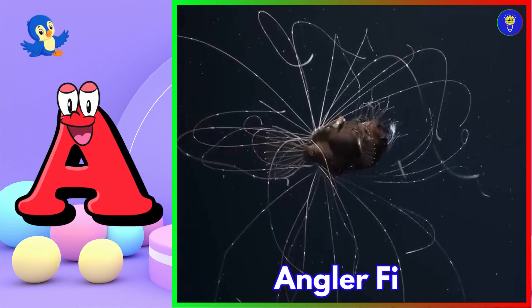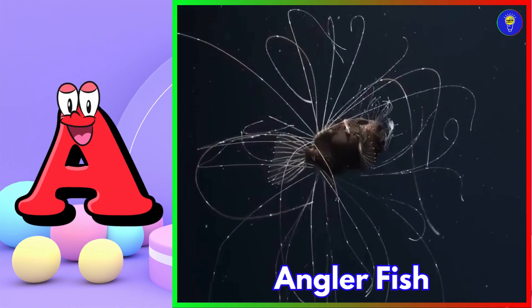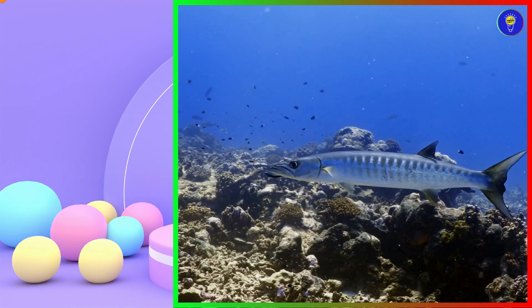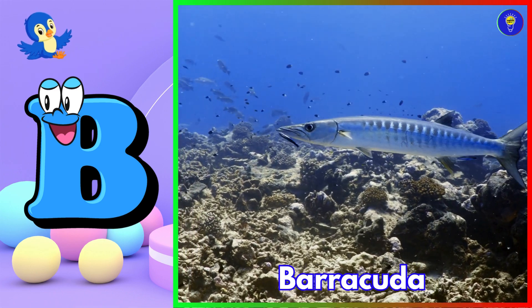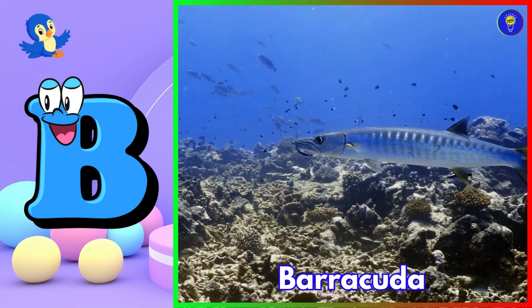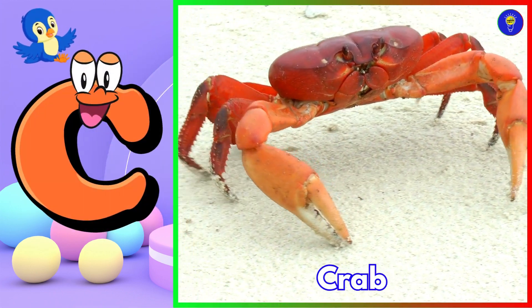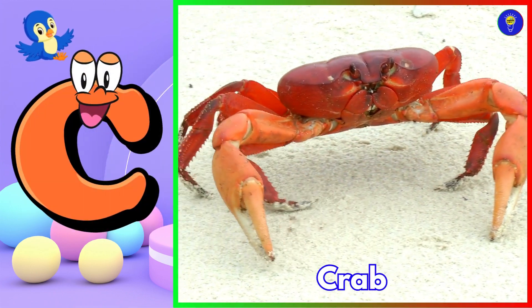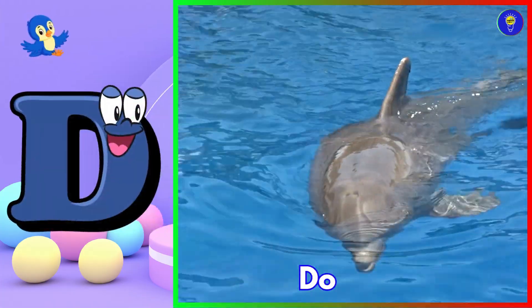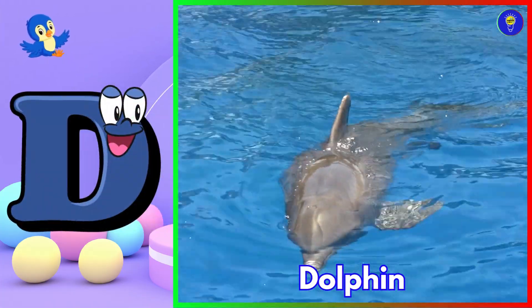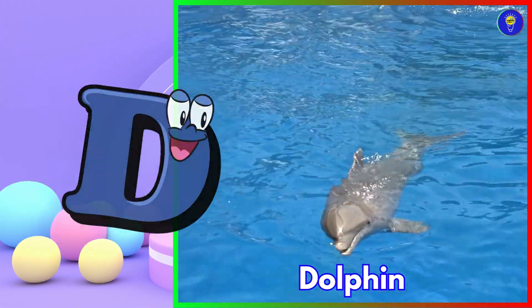A is for anglerfish. B is for barracuda. C is for crab. D is for dolphin.